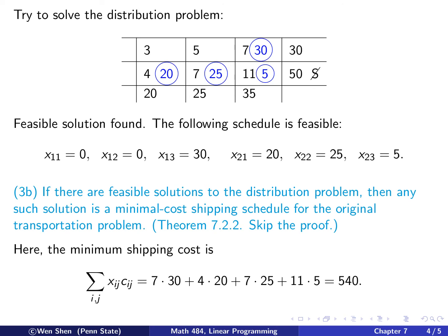So applying that part of the algorithm, once we have found a feasible solution, then we can conclude that that is a minimal shipping cost schedule. And the minimum shipping cost is just the summing over all x_ij times c_ij. So you could actually look at this table and compute it. These are 0, so you only add the non-zero part. 7 times 30, 4 times 20, 7 times 25, 11 times 5. And you add them up. And the cost is 540, and that's the minimum.